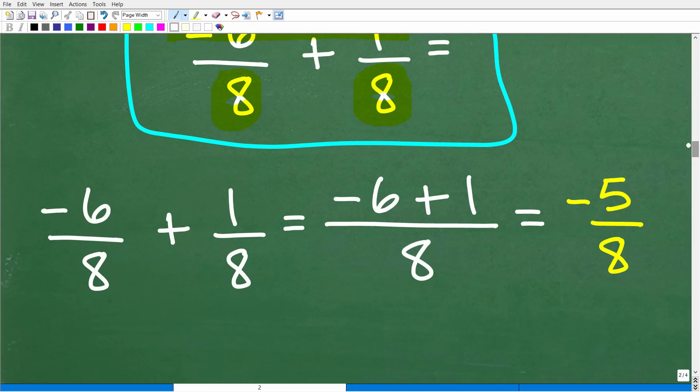Alright, now hopefully you're up to speed on your positive and negative numbers. Because we need to figure out what negative 6 plus 1 is equal to. Alright, so negative 6 plus 1 is equal to negative 5. So our answer here is negative 5 eighths.